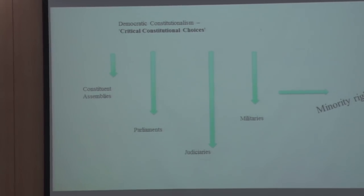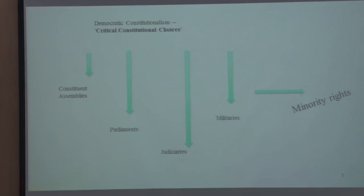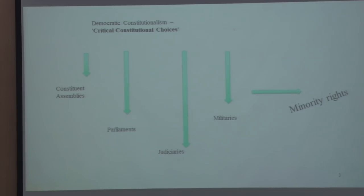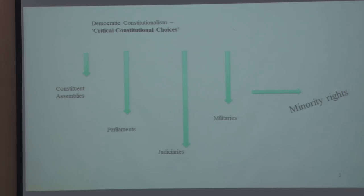Constituent assemblies, parliaments, judiciaries, militaries — you use the development of those institutions to assess minority rights, constitutionalism, and democracies. This is what I think about when I think about constitutionalism — not Article 1 says this and Article 10 says that. It is more about how these institutions have navigated the past, how they navigate the present, and how they will hold up in the future.